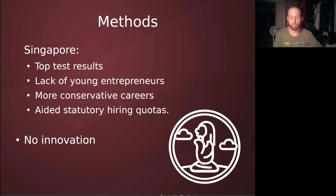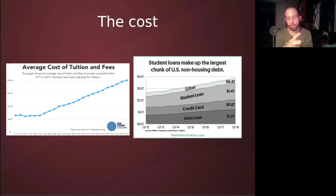Now let's have a look at the cost of education, which is also a very controversial topic. The king of the cost of education, of course, is the United States. It's a place where the price of college has been increasing and is the highest in the world. In fact, you can see on the picture on the right that student loans make up the largest chunk of U.S. non-house debt. So it's quite a significant amount in the U.S.